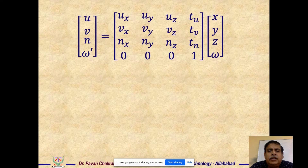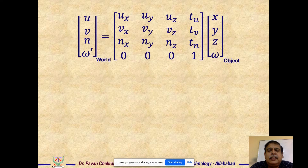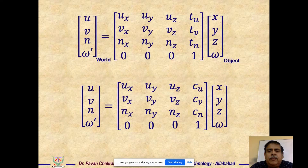So I have an object frame, which may be a Cartesian coordinate. I then move into a world frame, and then from the world frame I move into the camera frame. The translation between where objects are placed and the camera origin will be captured in the quantities t_u, t_v, and t_n.